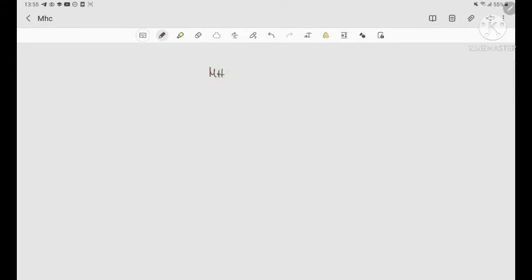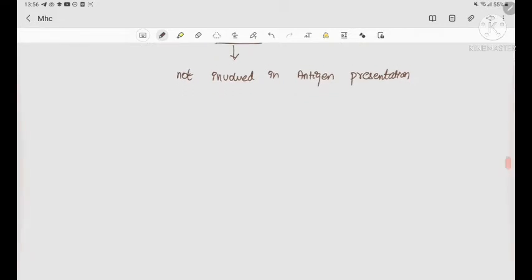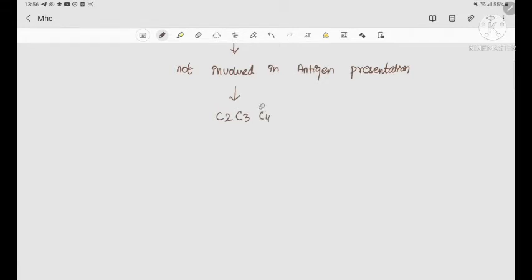There is one more type, MHC 3. This MHC 3 is not involved in antigen presentation. Instead, it carries the genes which code for complement C2, C4, C3 convertase, factor B, and properdin. So this is the function of MHC 3.